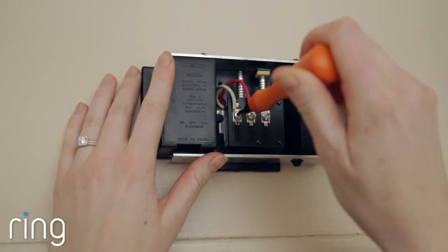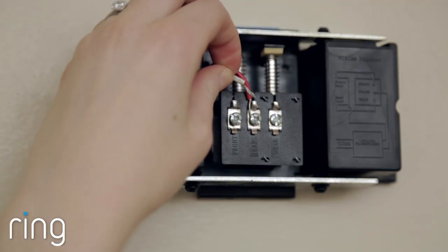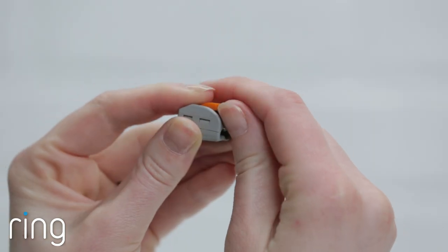Loosen the screw on the front terminal and remove the wire. Then connect this wire to the wire on the Pro Power Kit using one of the supplied gray and orange wire clips.